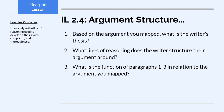Number three: what is the function of paragraphs 1 through 3 in relation to the argument you mapped? Paragraphs 1 through 3 serve to introduce the topic. They introduce punishment through shame as an idea gaining popularity. Then the writer comes in with paragraph 4 and says, wait — that may not be a great idea. So paragraphs 1 through 3 serve to introduce the popularity of this issue of punishment through public shaming.